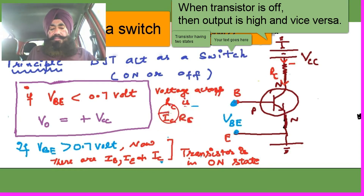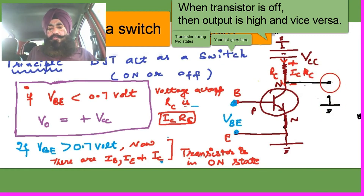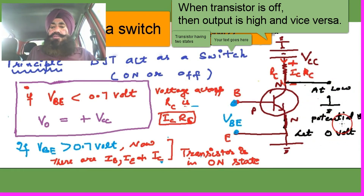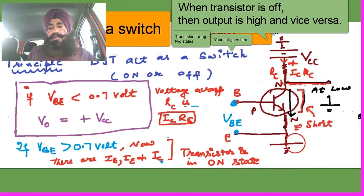When the collector current flows, it passes through RC and a voltage is established. The voltage appears across RC as IC·RC, with positive and negative ends. We are taking the output here, and the output shows low voltage — zero voltage, low potential. So when the transistor is on, the output potential is low — there is a short circuit between collector and emitter.